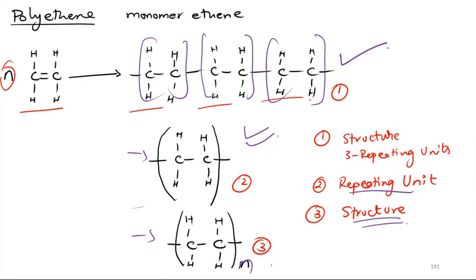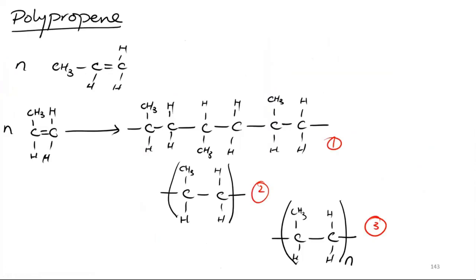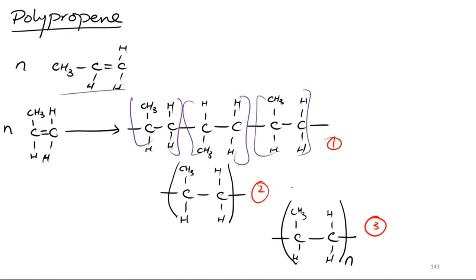The next example is polypropene. Here you can see n number of propene monomers. You make three repeating units, then a repeating unit, and then a full structure in the third part.